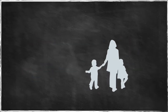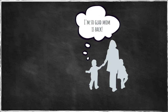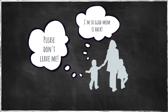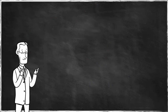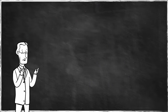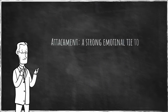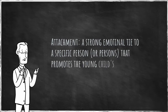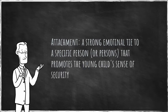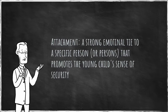These one- to two-year-olds were relieved when they were reunited with their mothers, yet remained very anxious about minor separations. Bowlby formulated the idea of attachment as a strong emotional tie to a specific person or persons that promotes the young child's sense of security.